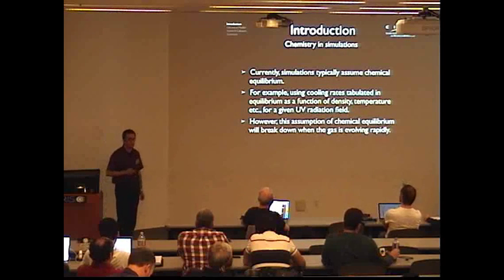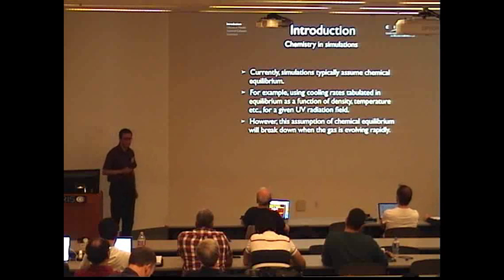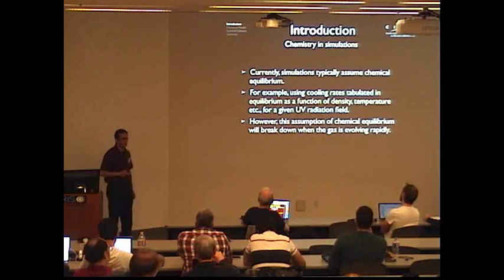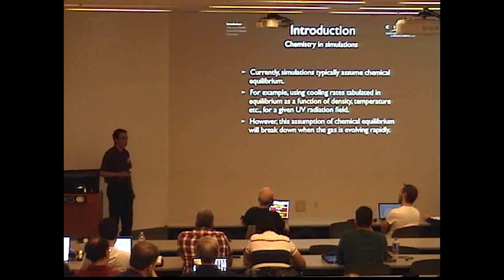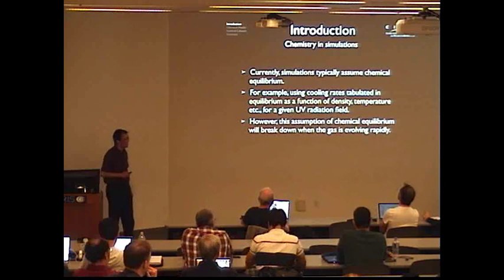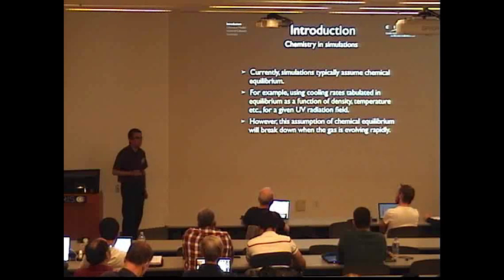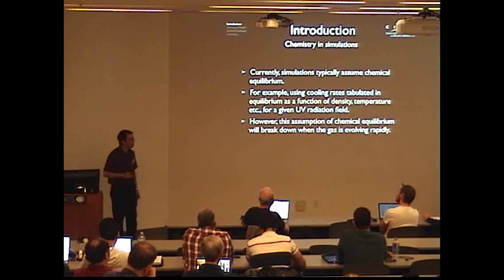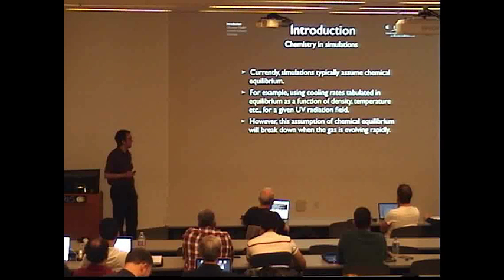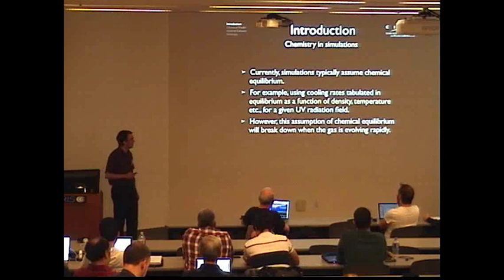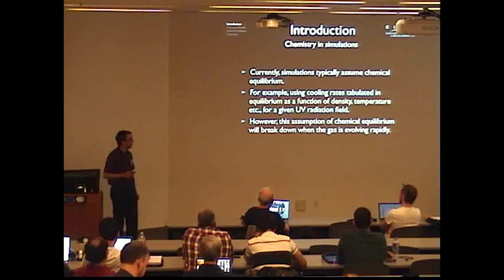Currently in simulations on galactic scales, it's often assumed that gas is in chemical equilibrium — that chemical reactions between ions and molecules have reached a steady state. For example, cooling rates used in simulations are often tabulated as a function of density and temperature, assuming chemical equilibrium. This assumption breaks down if the gas is evolving rapidly, on timescales shorter than the chemical timescales. For this project we wanted to develop a chemical model to follow non-equilibrium evolution of ions and molecules, implement this in hydrodynamic simulations of galaxies, and thereby calculate cooling rates more accurately and model observable line emission.